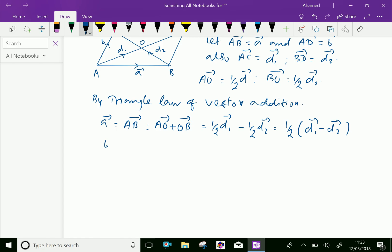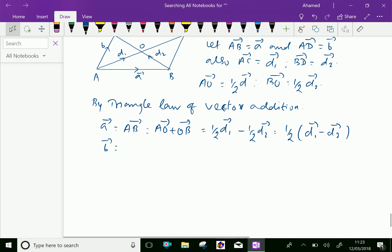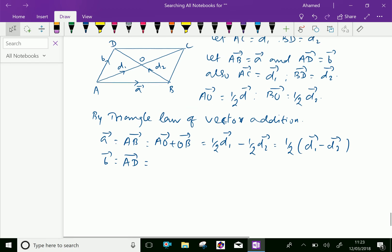Similarly, vector B equal AD. By addition, you can say AD is AO vector plus vector OD. Vector AO is half of vector D1, which is half takeout common, D1 vector plus D2 vector.